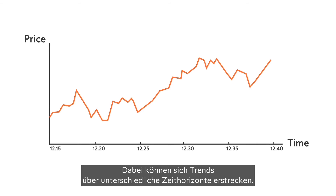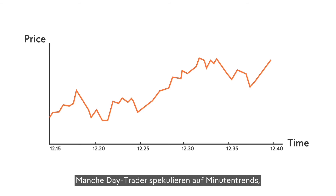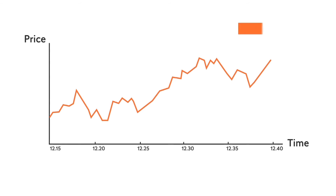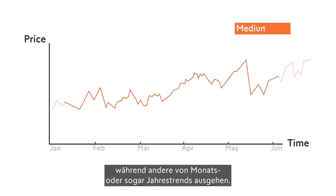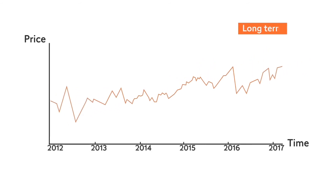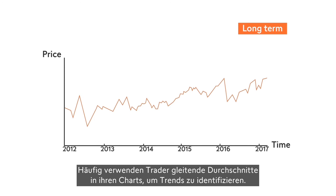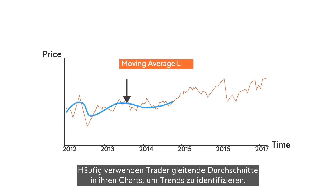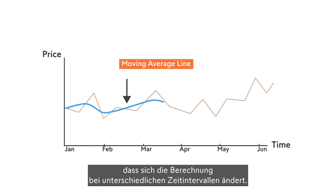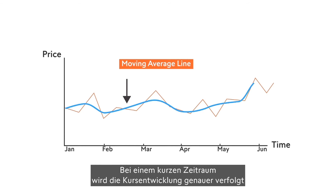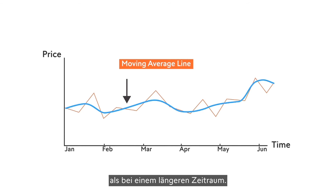Trends can apply to various time frames. Some day traders speak of trends in minutes, while other traders think of trends in months or even years. Traders often identify trends by adding moving average lines to their charts. A moving average simply means that the calculation changes with time, and a short time frame follows the price more closely than a longer time frame.